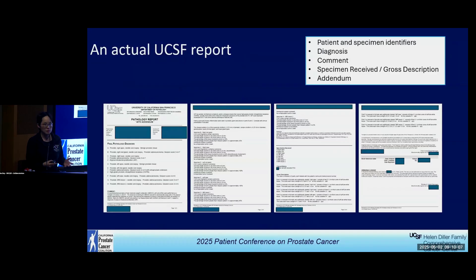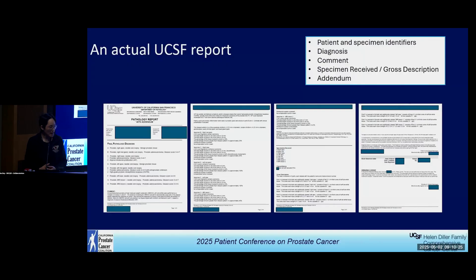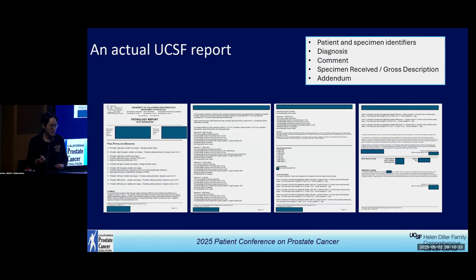This is an actual UCSF report for a localized prostate biopsy. UCSF actually issues probably the most sophisticated pathology reports. In many other institutions, the same material might get just one page of report. We put a lot of information in to help our clinicians make their treatment plan, and we're really proud of that. If you can understand a UCSF pathology report, you're probably fine everywhere.